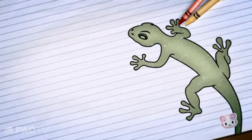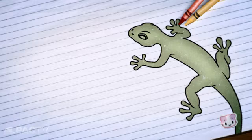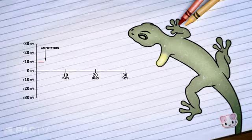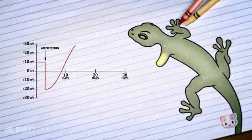In amputated salamander limbs, the electrical current, or injury current, was found to change direction at the point of amputation, going from approximately neutral to positive, and then shortly after the injury, it will go from positive to highly negative.